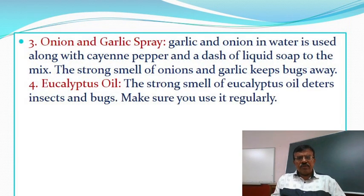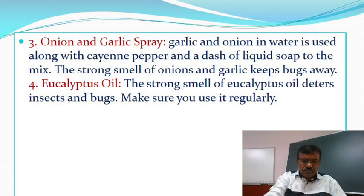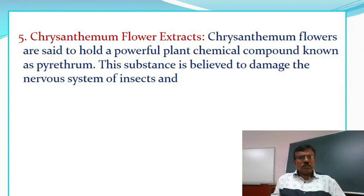Onion and Garlic Spray: garlic and onion in water is used along with cayenne pepper and a dash of liquid soap to the mix. Eucalyptus oil is said to hold a powerful plant chemical compound known as pyrethrum. This substance is believed to damage the nervous system of insects.